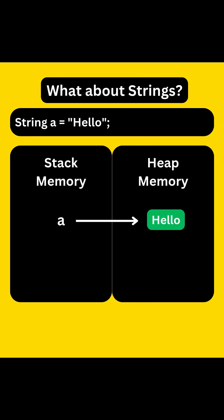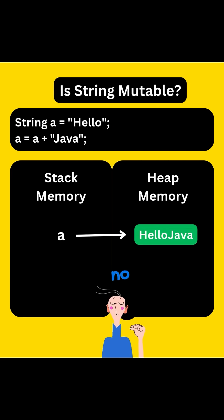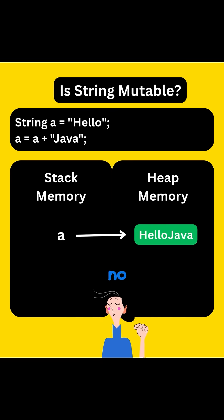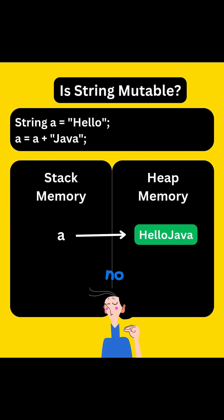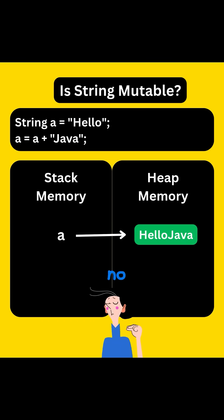Now if instead of Employee we write String A equals to 'hello', just like before A is a reference stored in the stack but 'hello' is stored in heap memory. Now suppose we write A equals A plus 'Java'. At first we might think 'hello' gets updated to 'hello Java', but that's wrong. Java doesn't work that way for strings.